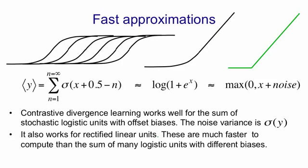Alternatively, we can use that green curve and use rectified linear units. They're much faster to compute because we don't need to go through the logistic many times. And contrastive divergence works just fine with those.